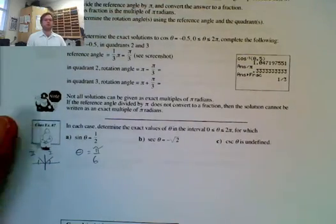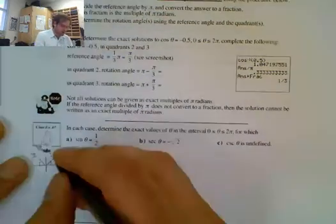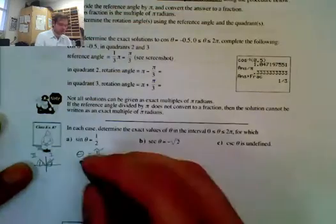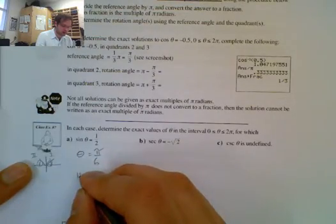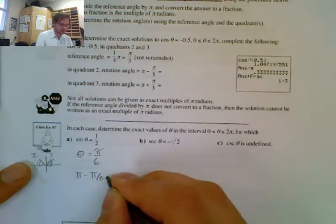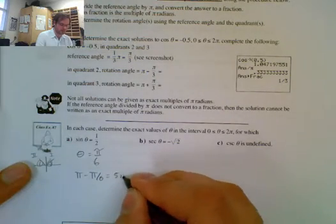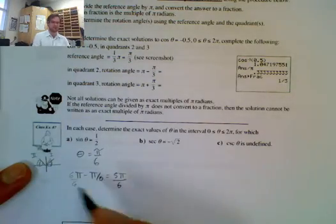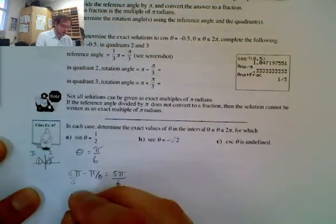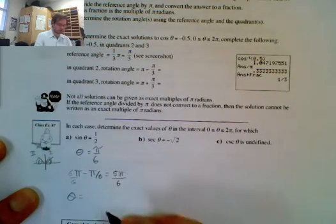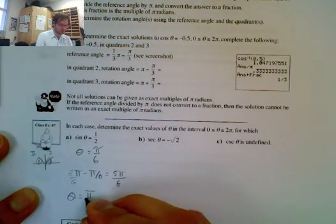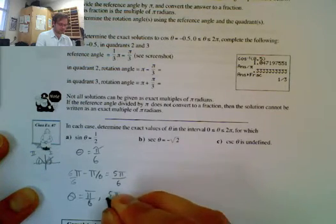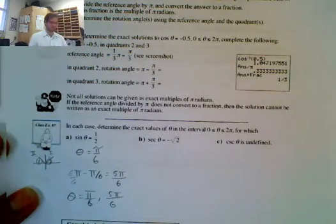One angle is the reference angle itself, and the other angle is π minus π/6, which gives 5π/6. So theta equals π/6 radians and 5π/6 radians.